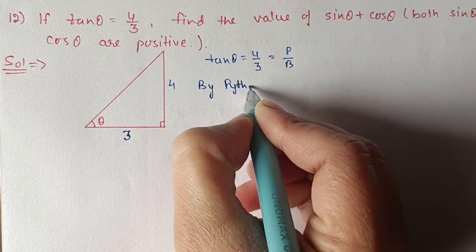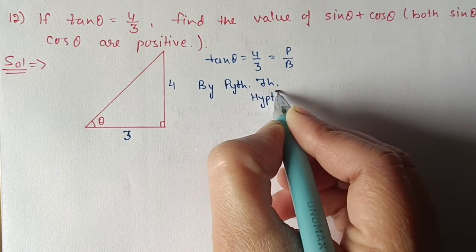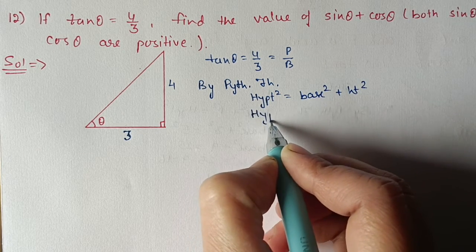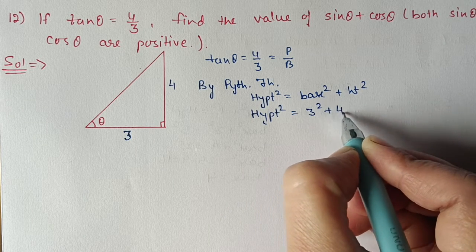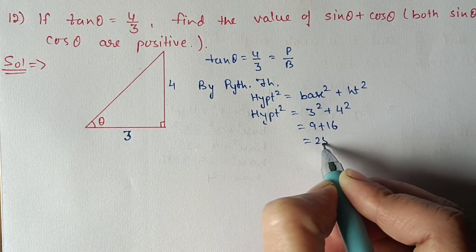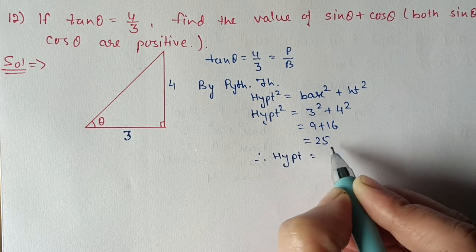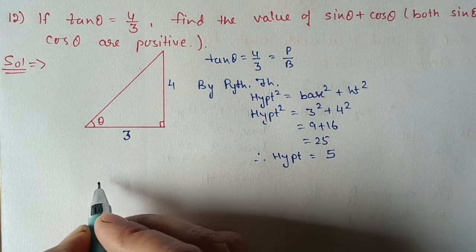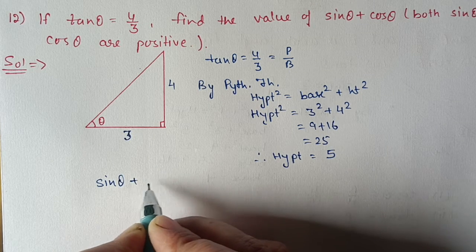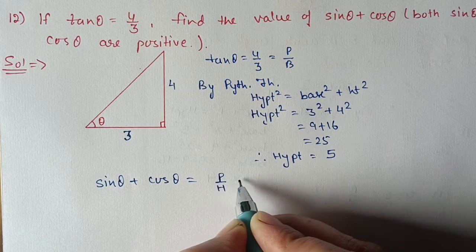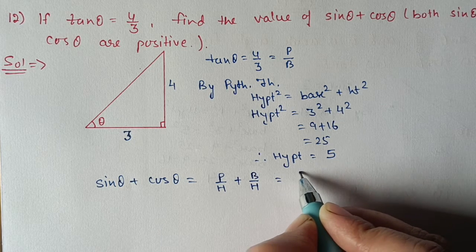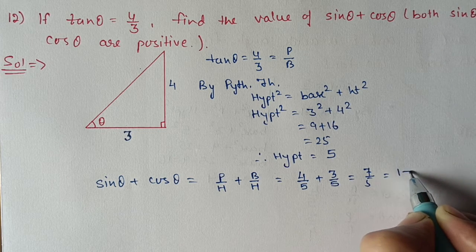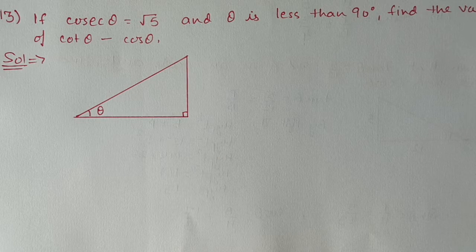By Pythagoras theorem: hypotenuse square equals base square plus height square. Base is 3 and height is 4, so 9 plus 16 gives 25. Therefore hypotenuse equals 5 (taking the positive value, as mentioned in the question sin θ and cos θ are positive). Now sin θ plus cos θ equals perpendicular by hypotenuse plus base by hypotenuse: 4 by 5 plus 3 by 5, giving 7 by 5, or 1 whole 2 by 5.